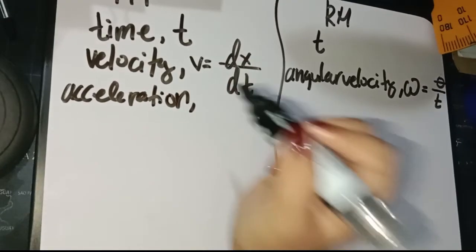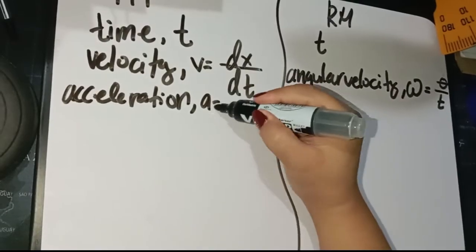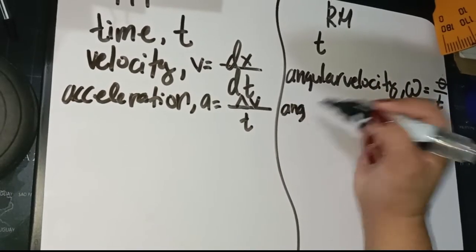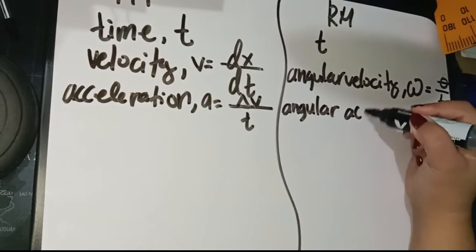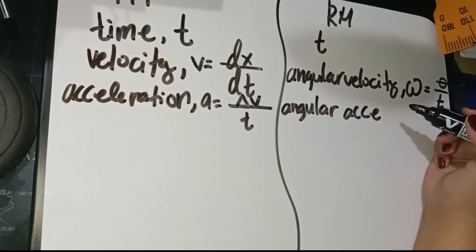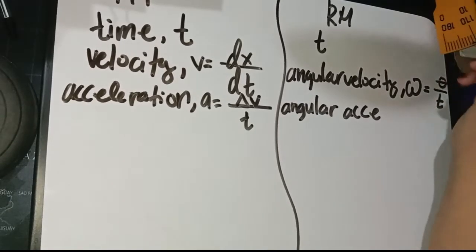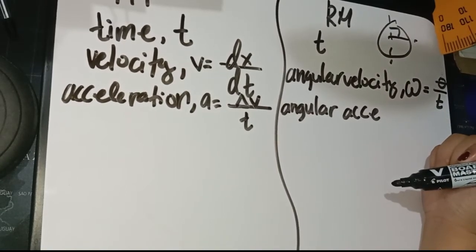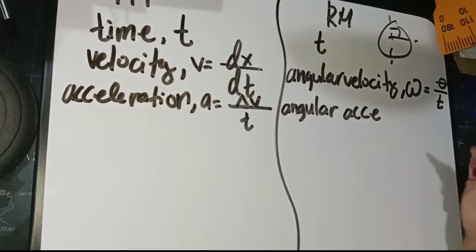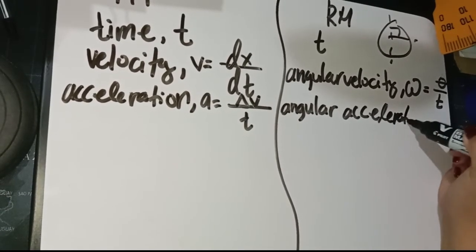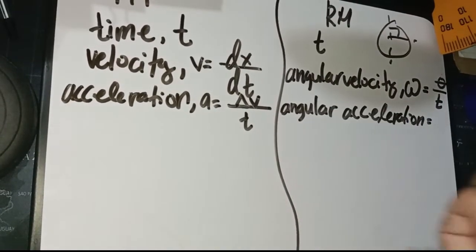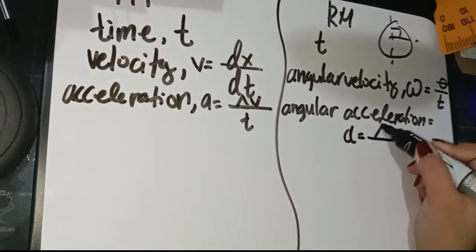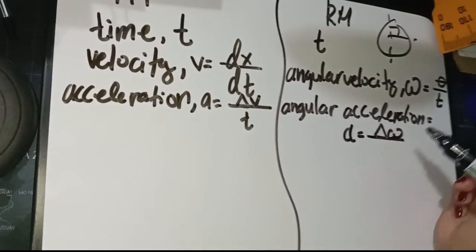We also have acceleration. In translational motion, acceleration A equals change in velocity over time. The analogous counterpart in rotational motion is angular acceleration. We use the term angular because an object moving in a circular path on a fixed axis creates an angle, giving us angular acceleration, angular velocity, and angular displacement. Angular acceleration is represented as alpha, which equals change in omega over time.